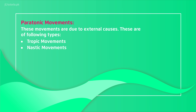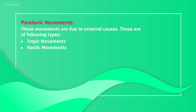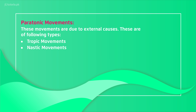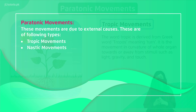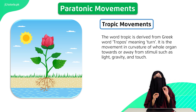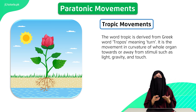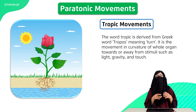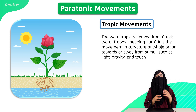Paratonic movement is movement caused by external stimuli — external factors like temperature, light intensity, and other factors. There are two types: tropic movement and nastic movement. Tropic movement is the movement in which plants bend towards the external stimulus. We call bending towards light phototropic, bending towards water hydrotropic, and bending towards chemicals chemotropic.